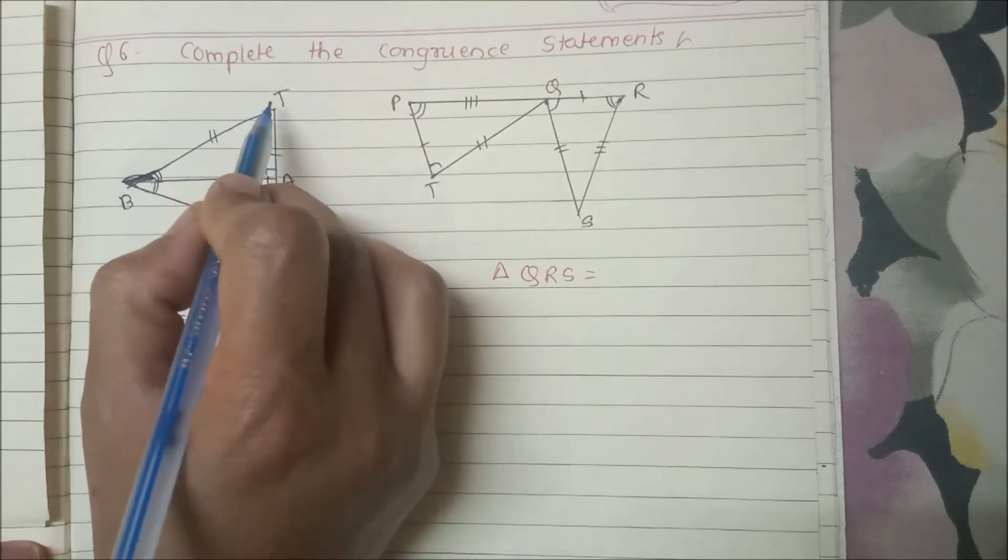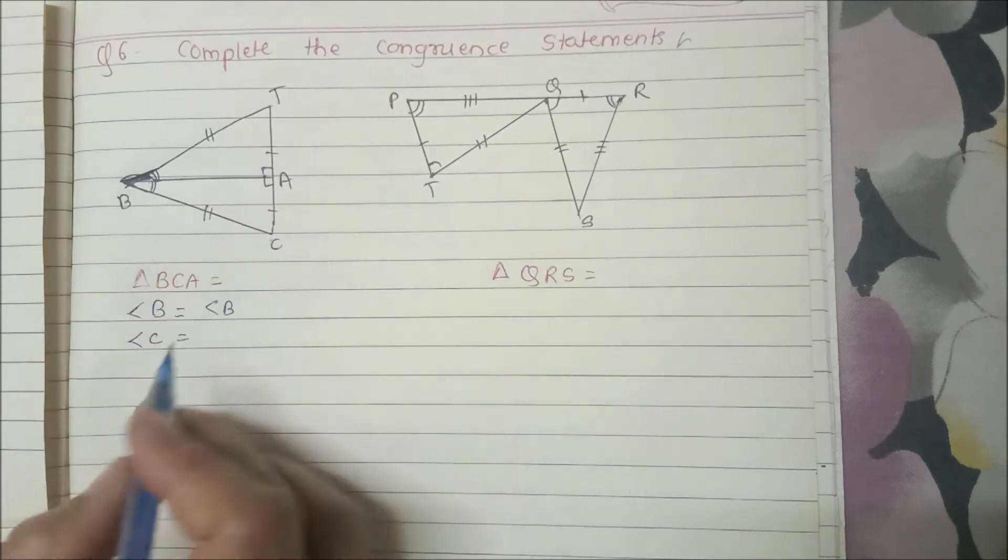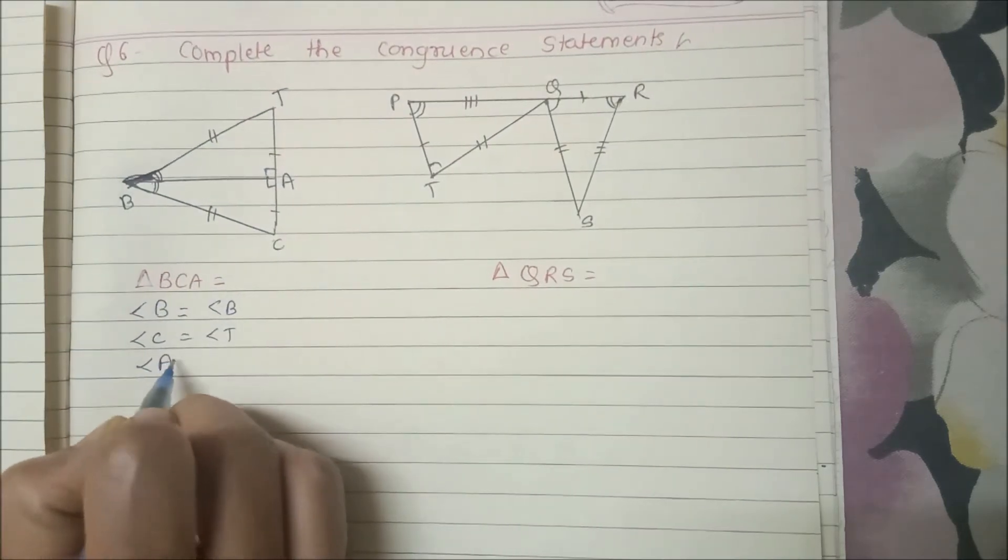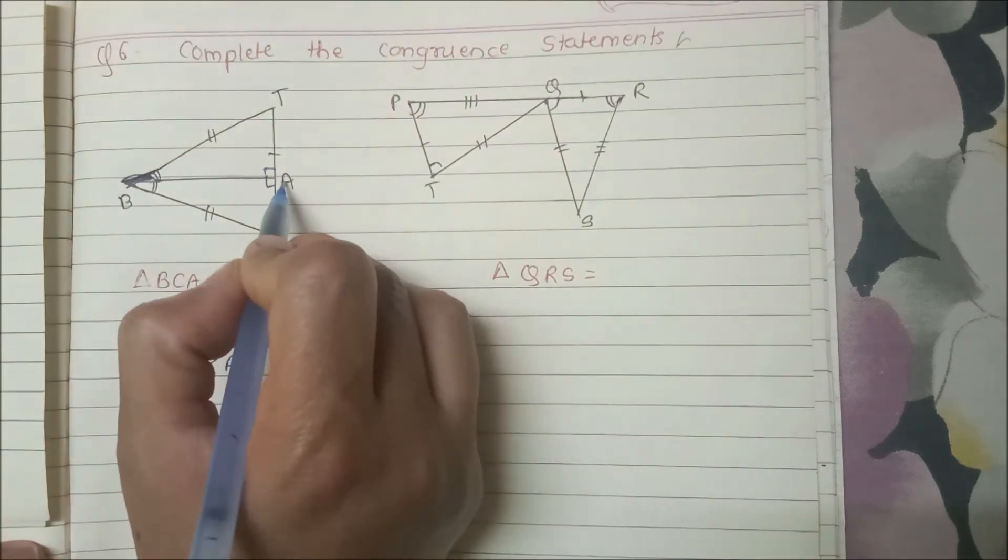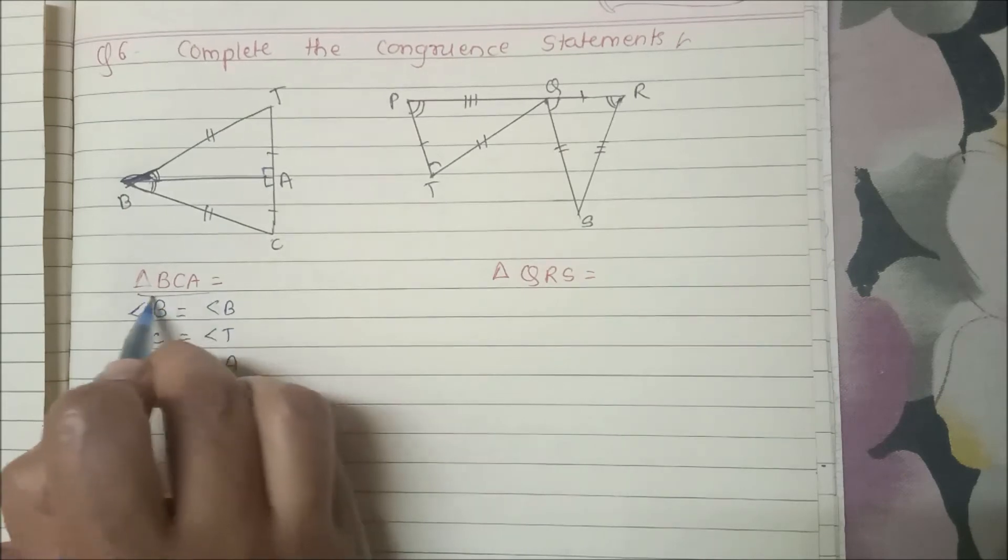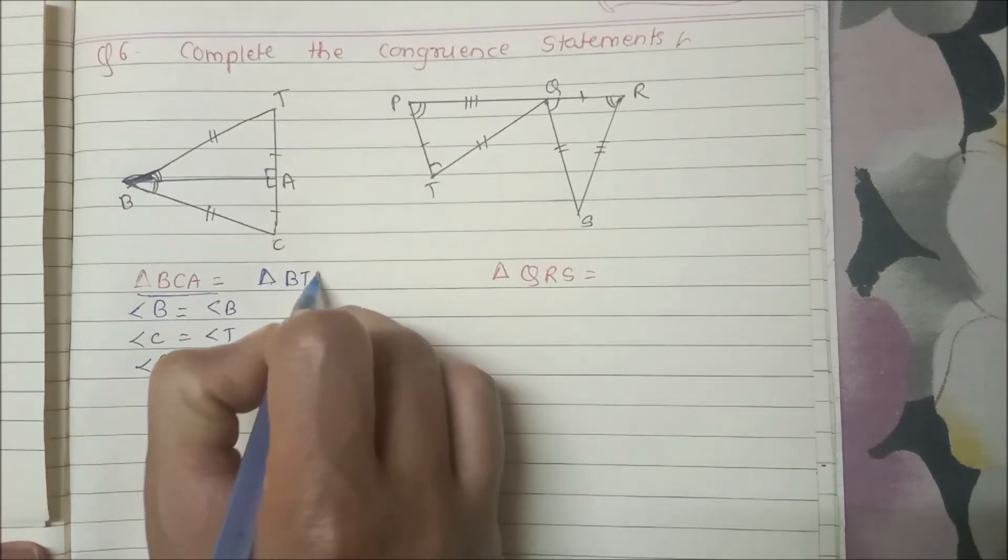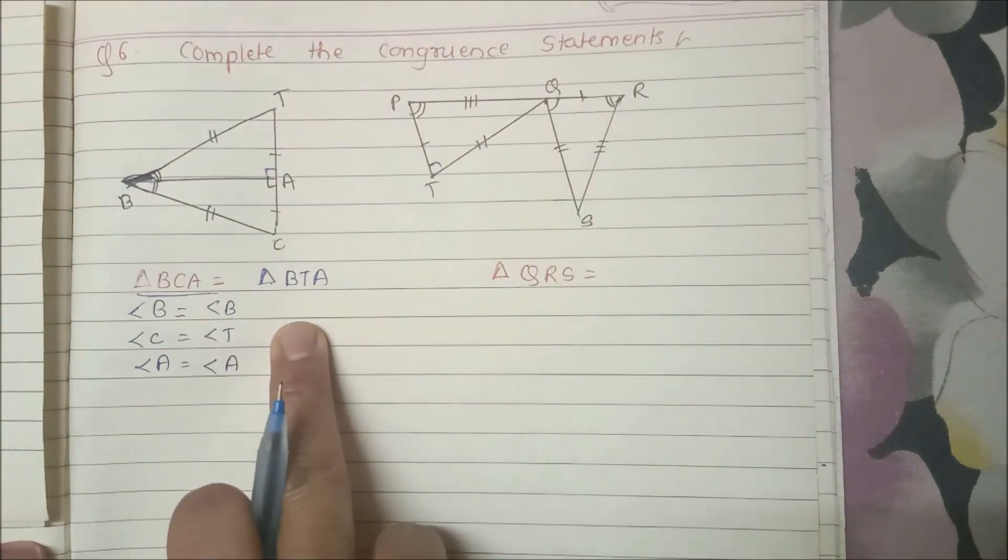Here will be the same thing. So if it is 90 degrees and this angle minus, then T will be T. So angle C is equal to angle T. And angle A is common. So here we have the statement. Here we have triangle B, T, A. Right. This way, this statement is complete.